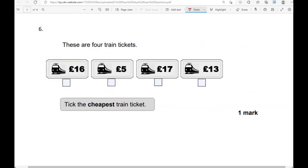These are 4 train tickets. Take the cheapest train ticket. We've got £16, £5, £17 and £13. £5 is below 10. The rest of them are above 10. So £5 is the cheapest.